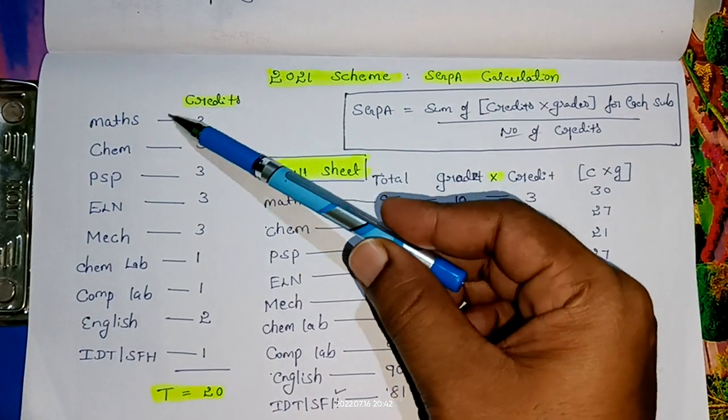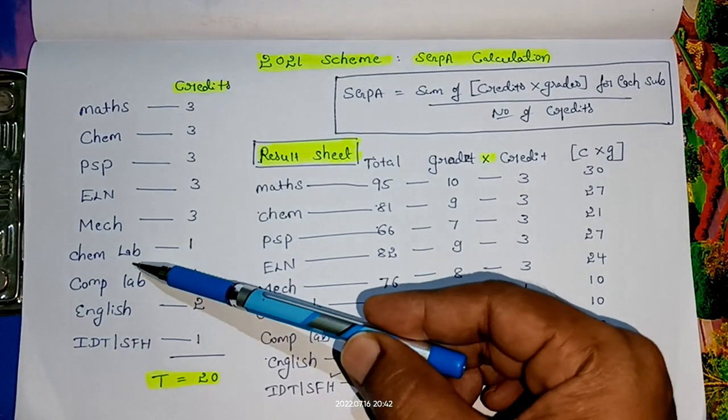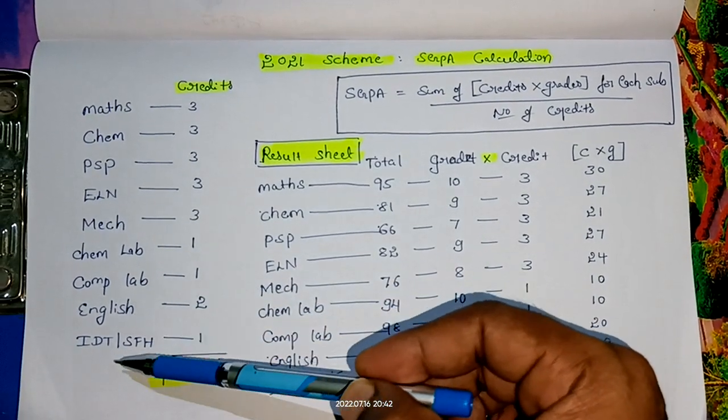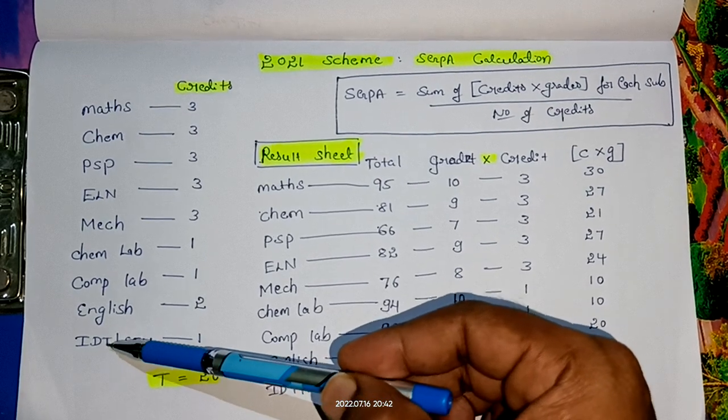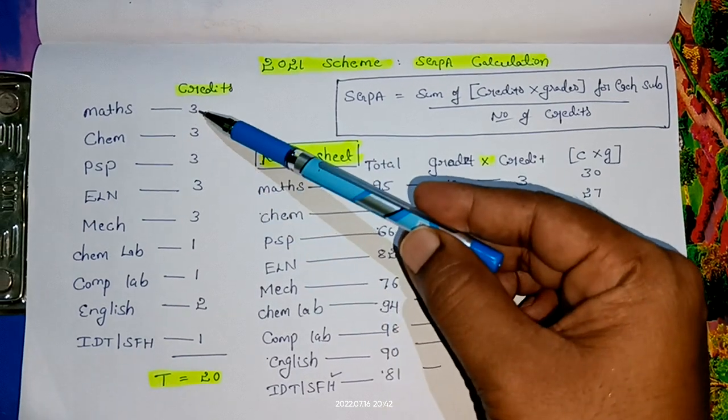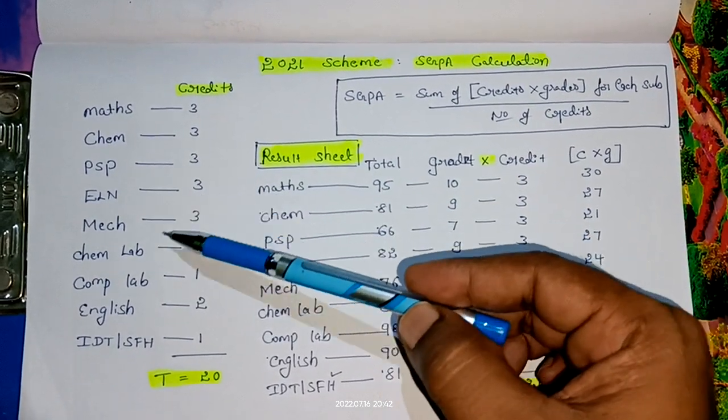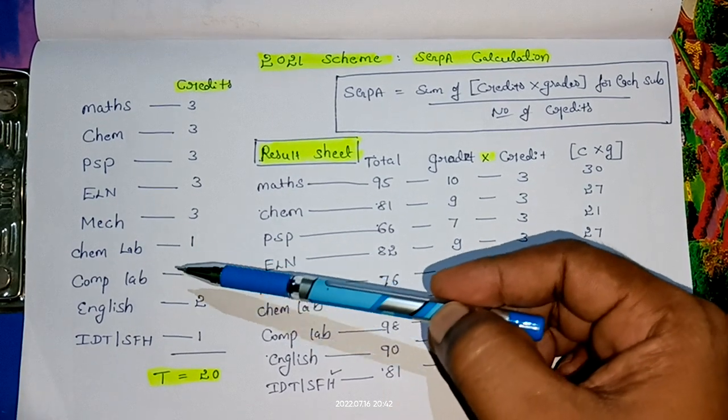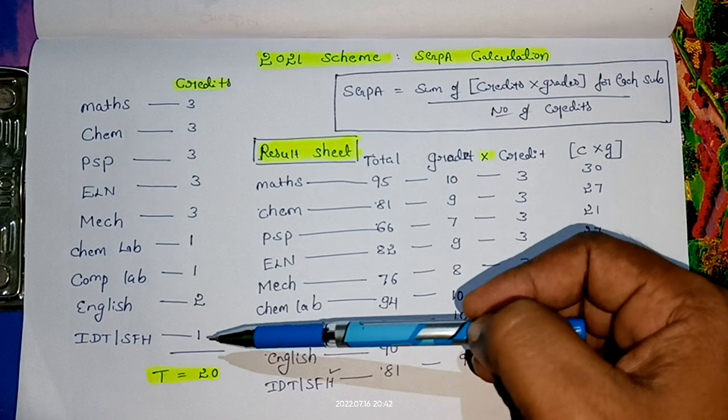In the C-cycle, I have considered these subjects: Mathematics, Chemistry, PSP, ELN, Mechanical, Chemistry Lab, Computer Lab, English, and IDTR/SFH (Innovation and Design Thinking or Scientific Foundation of Health). In front of each subject, I have written the credits: Maths 3, Chemistry 3, PSP 3, ELN 3, Mechanical 3, Chemistry Lab 1, Computer Lab 1, English 2, and IDTR/SFH 1.